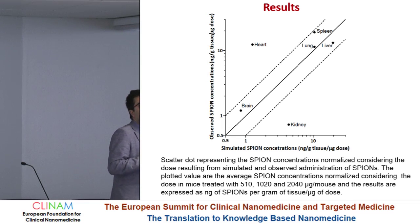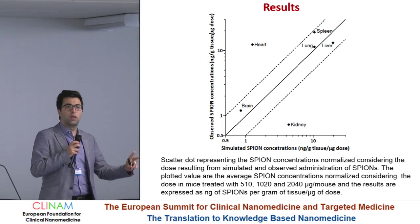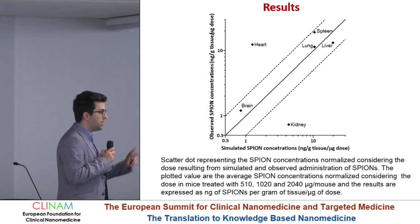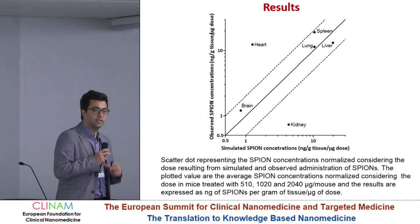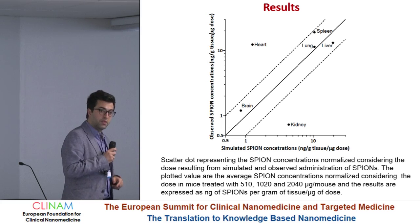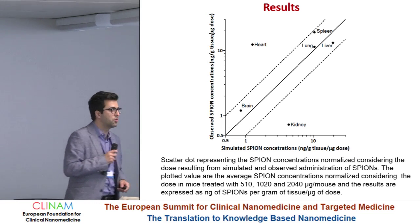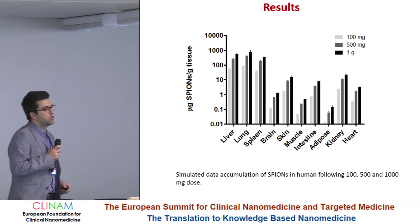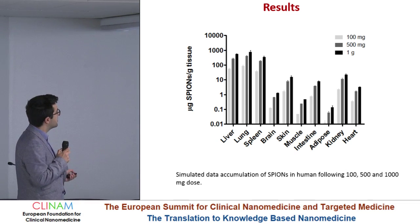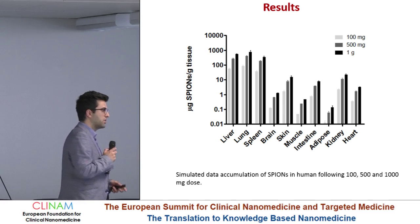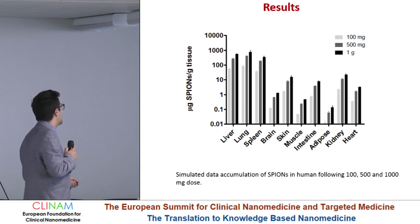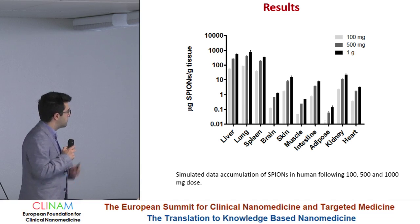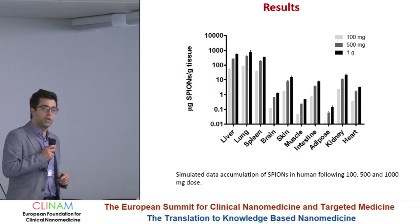Based on this model that contains all the anatomical and physiological parameters for mice, we then changed all the anatomical and physiological parameters, as well as the number of macrophages and the size of organs, and we tried to represent humans — predicting the theoretical disposition of SPIONs in humans. We simulated a theoretical IV dose of 100 and 501 grams of SPIONs, with an exposure of seven days. On a logarithmic scale, we can clearly predict a higher exposure in liver, lung, and spleen, which would be 2 to 3-fold higher than other organs simulated in our model.